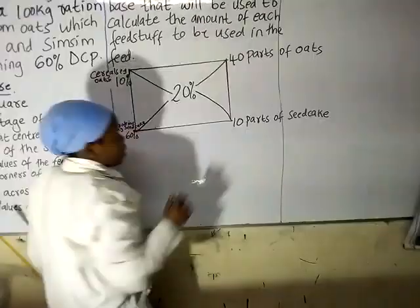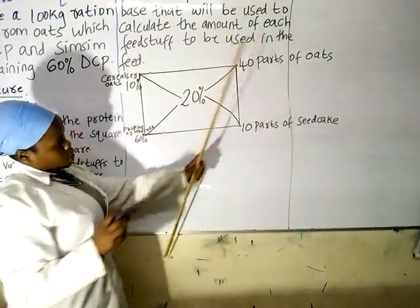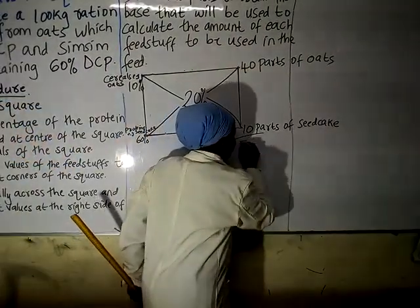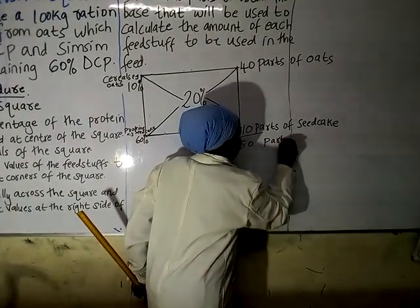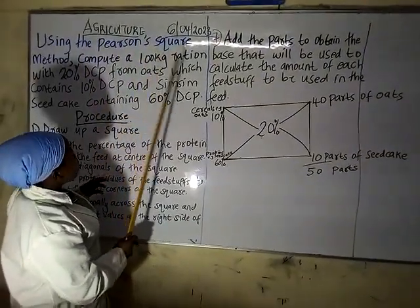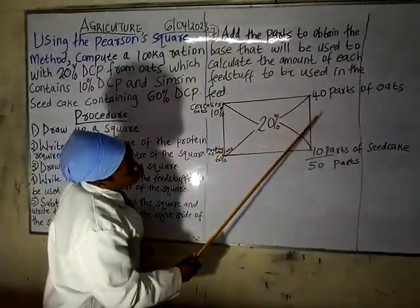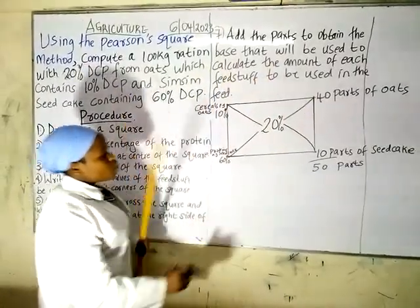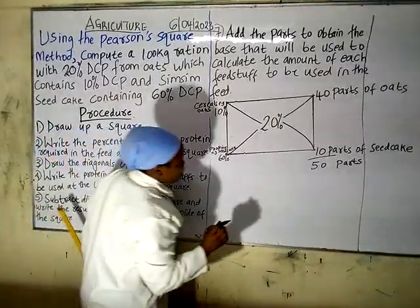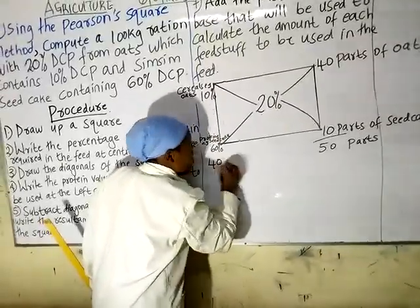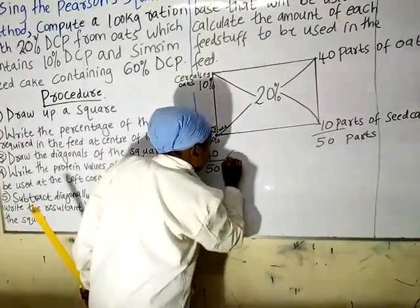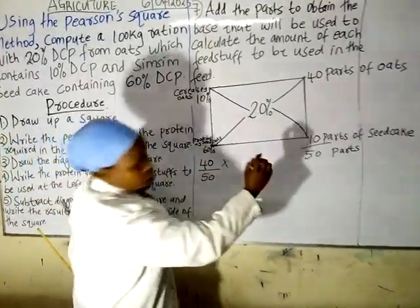After that, add the two parts: 40 parts of oats plus 10 parts of seed cake, whereby you get 50 parts total. Then, using the Pearson square to compute 100 grams, you take 40 parts of oats divided by the total 50 parts, times 100.